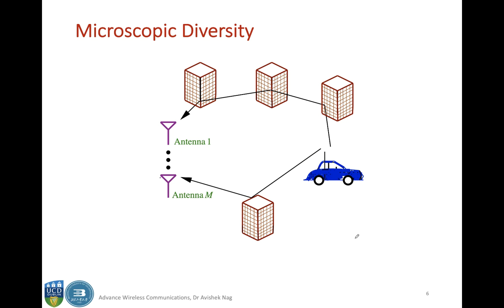This diagram shows an example of microscopic diversity. Imagine multiple antennas — antenna 1 to antenna M — receiving signals from a mobile unit in a car. One signal travels through a shorter path while another travels through a longer path, which has more attenuation and more fading. You can then combine these two signals to generate a better signal, or choose the best signal to mitigate the effect of fading.